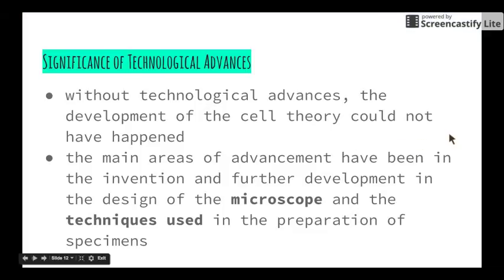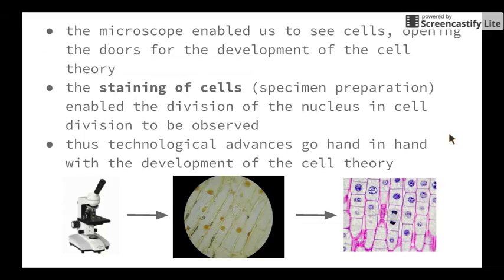Obviously, without technological advances, the development of the cell theory could not have happened. Before we had our really simple microscopes in the 1800s, people just believed that everything was as it appeared. There wasn't really that understanding that large organisms are made up of these tiny microscopic things that all work together to keep the organism functioning. The main areas of advancement have been in the invention and further development of the microscope, and the techniques used in the preparation of specimens to view under the microscope, which obviously enabled us to see cells and opened the doors for the initial development of the cell theory.